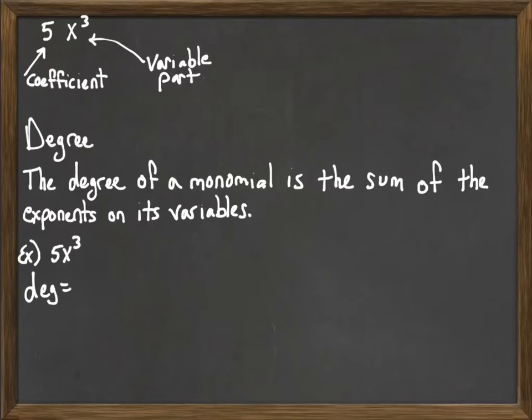For example, if we have 5x to the third, when we have just a single variable, like 5x to the third, the degree is just the exponent. So 5x to the third, the degree is 3.